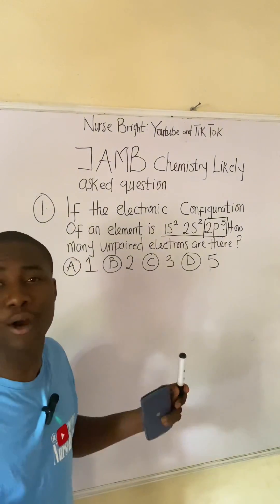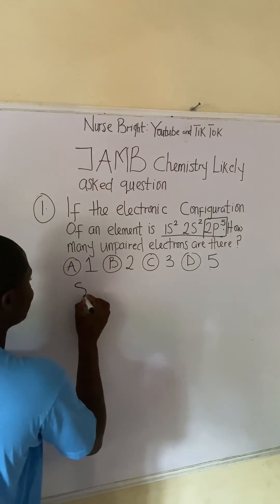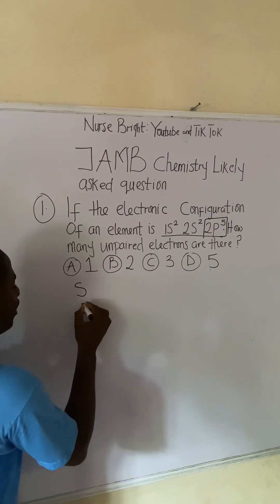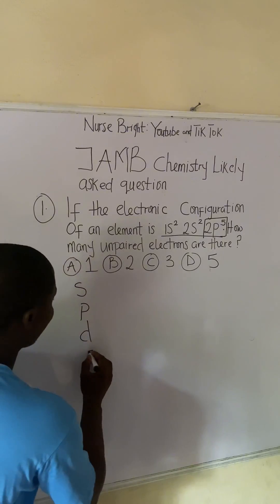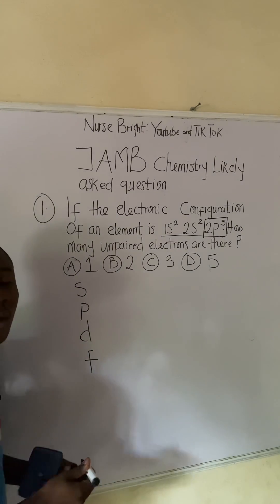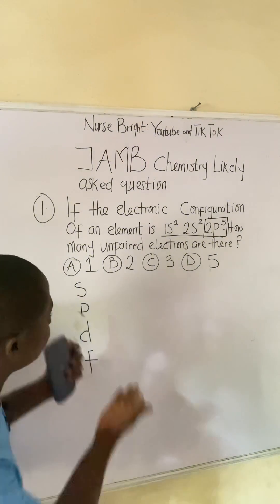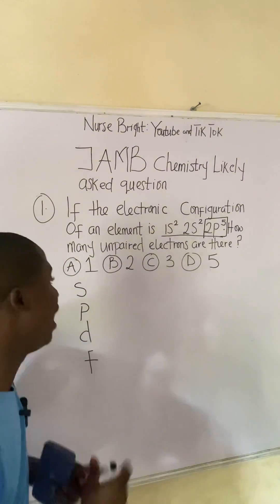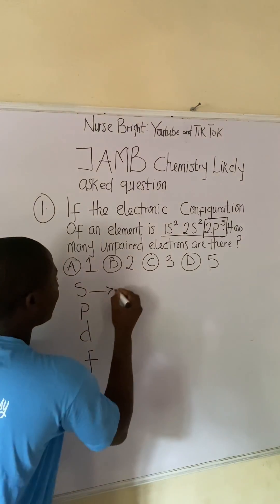In chemistry we have different orbitals: the s orbital, the p orbital, the d orbital, and the f orbital. We also have g and h orbitals, but for the level of the JAM exam, questions can actually come from these main ones. This must be noted.